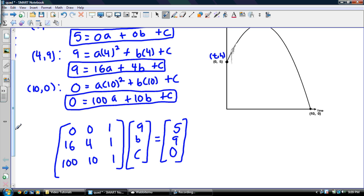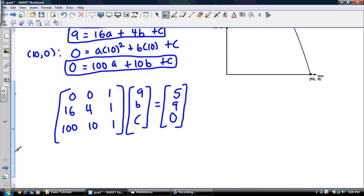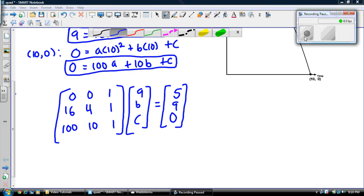All righty. So, there is my matrix equation. I just want you to recognize that this is the coefficient matrix right here. This is the variable matrix, and this is the constant matrix. A multiple choice question on an exam could simply be identify the coefficient matrix of these three equations, or identify the constant matrix. So, a very easy question if you know what it means. If you don't know what it means, then it's pretty much impossible.